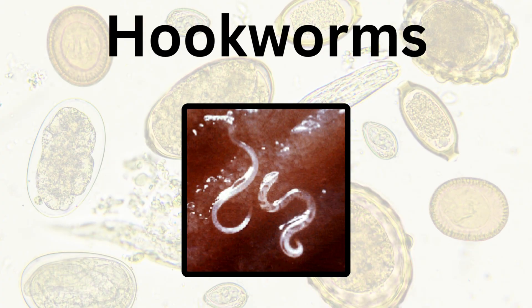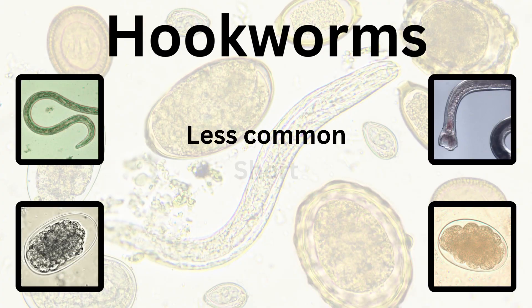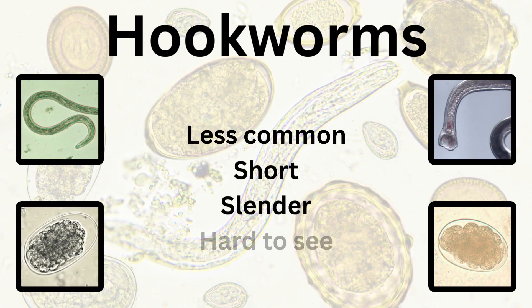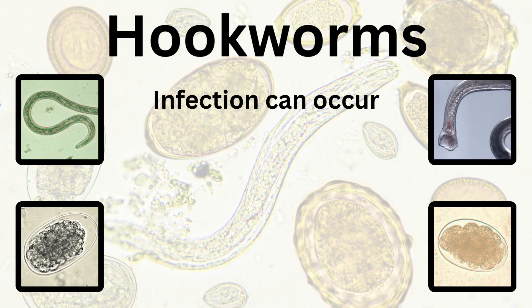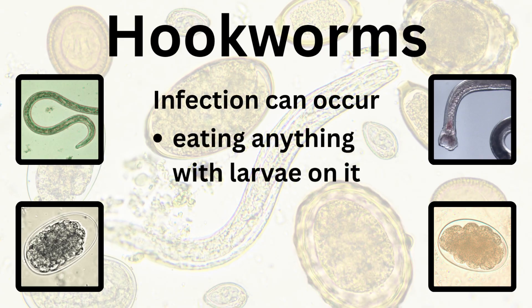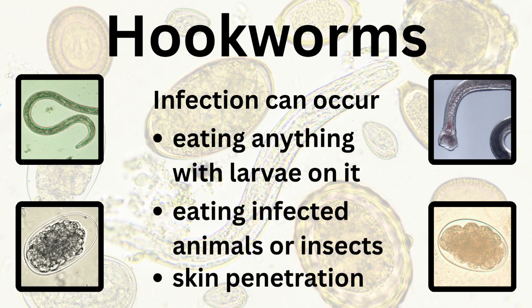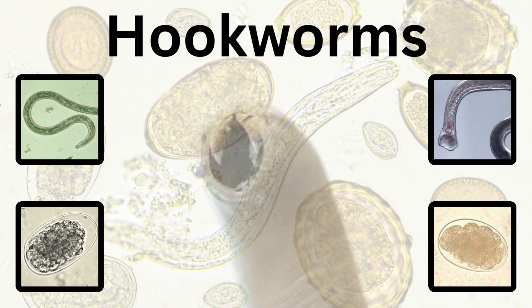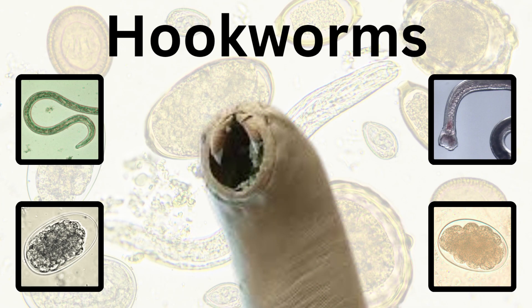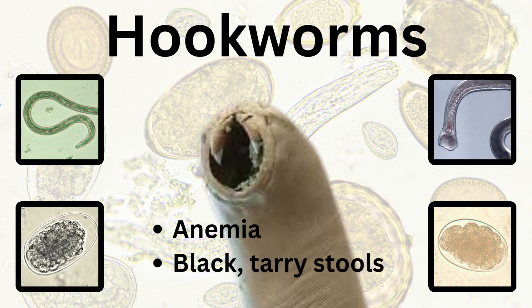Our next parasite is the hookworm. Hookworms are not very common — short, slender, and you typically do not see them due to their size. Cats can become infected by ingesting something contaminated with the larva, eating infected animals or insects, or by the larva penetrating the skin — so make sure you don't run around the yard barefoot. They are literally vampires in your cat's intestines, attaching to the intestinal wall and sucking blood for their nourishment.